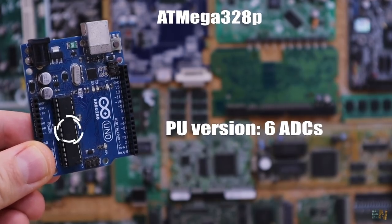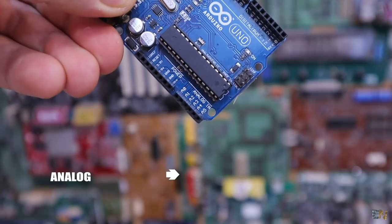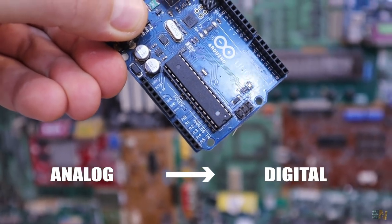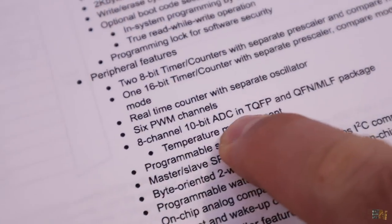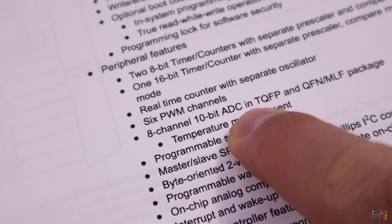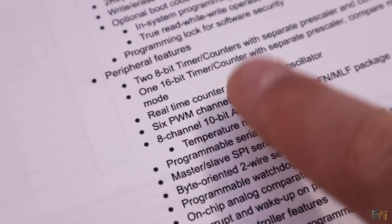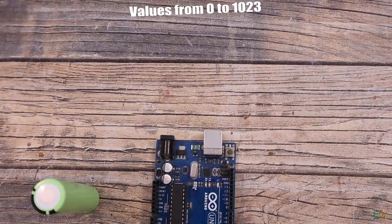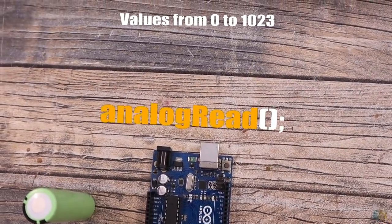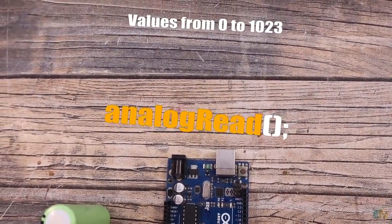We use these inputs to measure voltage and pass from analog to digital values, which in this case the Arduino Uno has a 10 bits ADC, so digital values from 0 to 1023. But there is a little bit more than the well-known analog read function, so let's dive in.